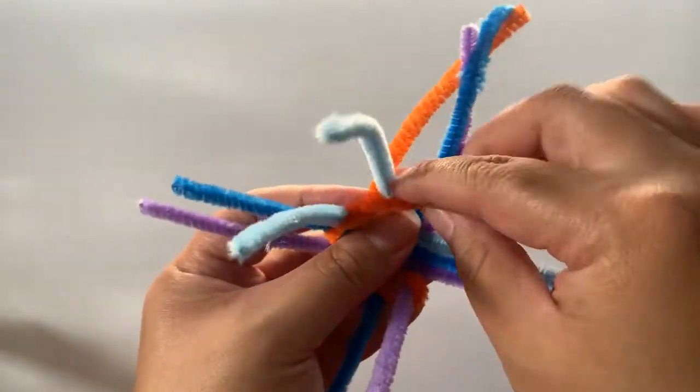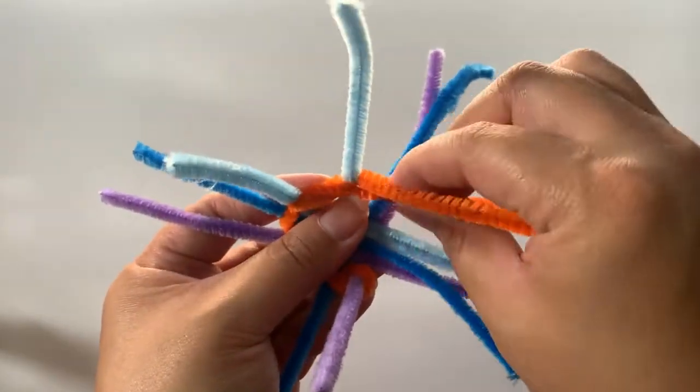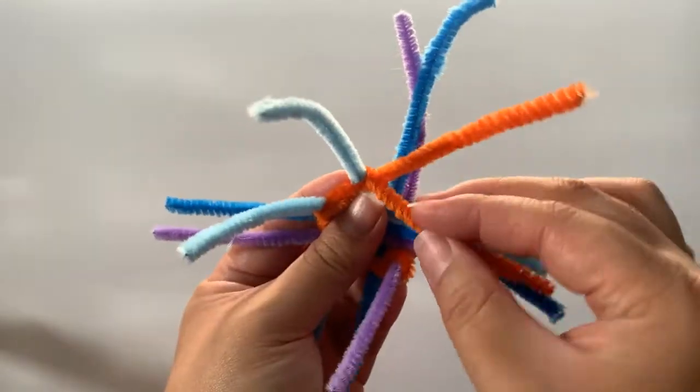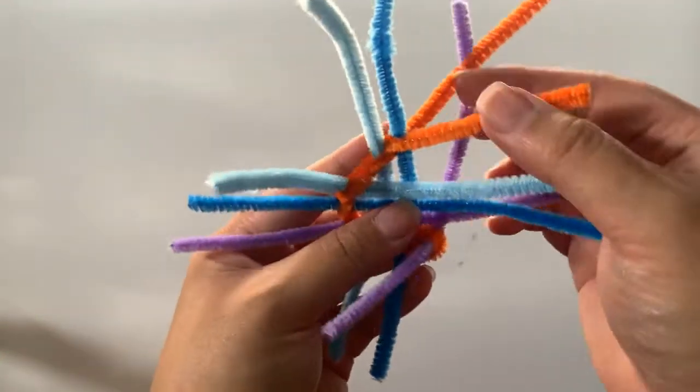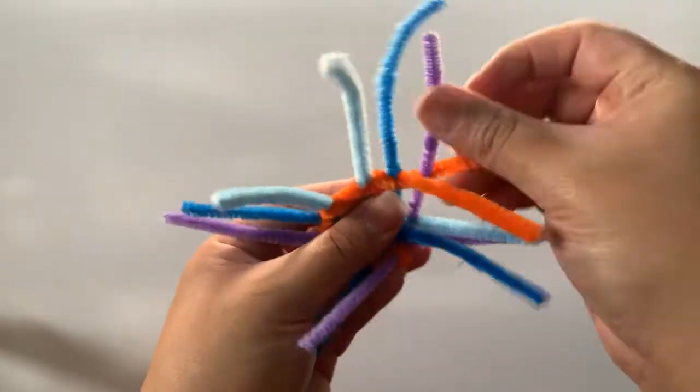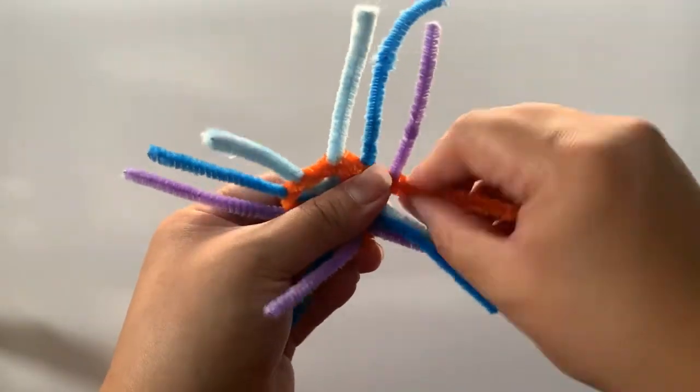Again put in a short pipe cleaner in between the folded pipe cleaner and then twist it to secure it in place. Try to do this as close together and as tight as you can to make sure you avoid any gaps.